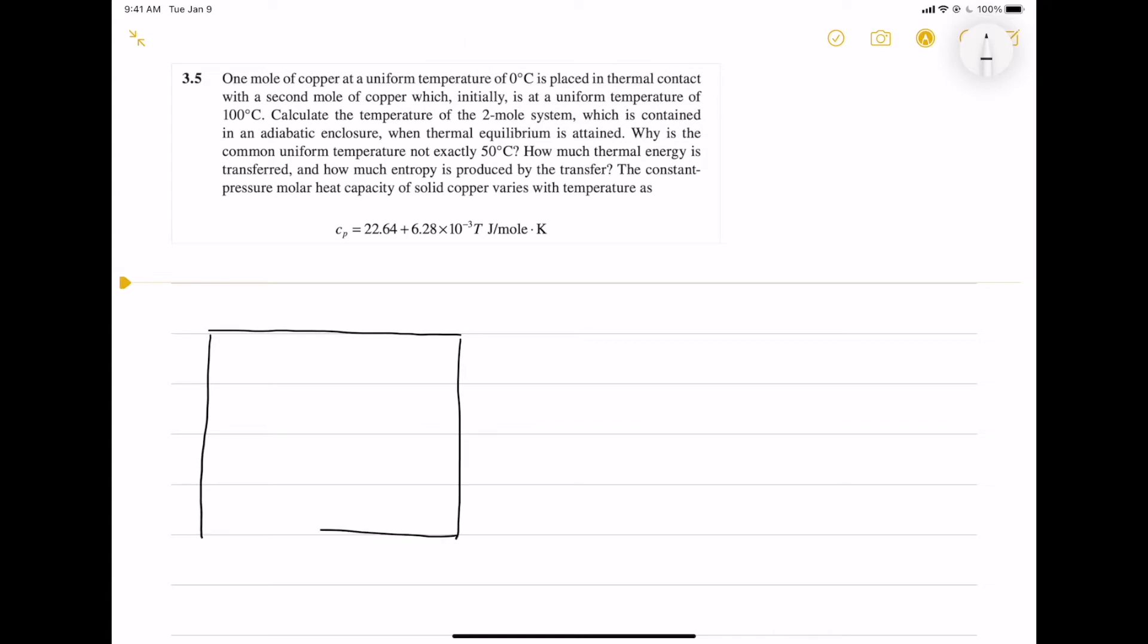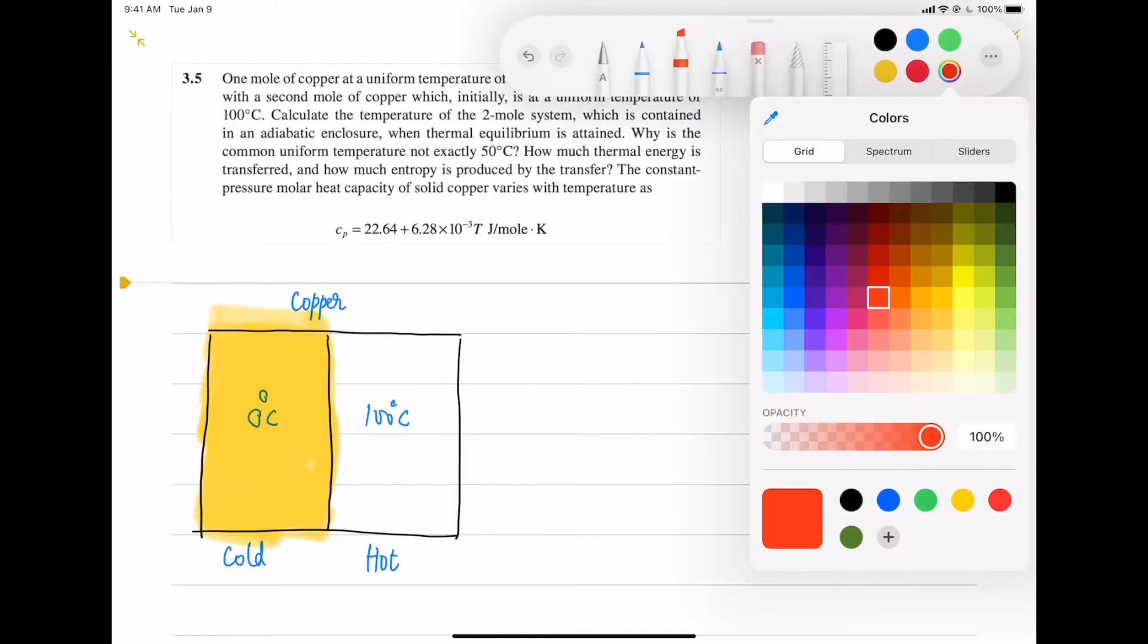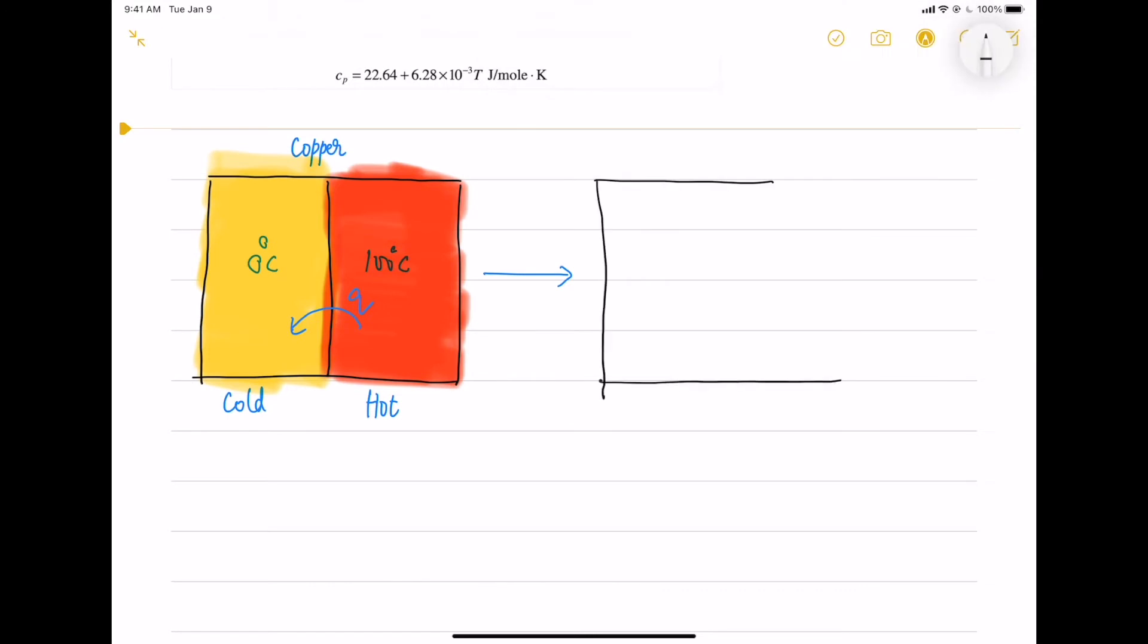In this question, we are given a cold and hot copper at these temperatures placed side by side in an adiabatic enclosure. There is a heat transfer happening and there will be a final equilibrium temperature. We need to find equilibrium temperature.